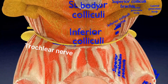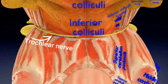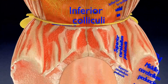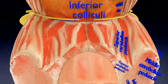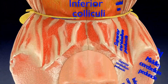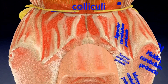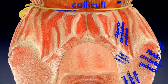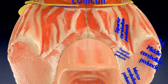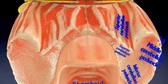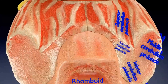The trochlear nerve, or cranial nerve 4, is the only cranial nerve to exit the dorsal side of the brainstem. It innervates the contralateral superior oblique muscle of the eye. Damage to the trochlear nerve will result in loss of this eye movement and may produce double vision or diplopia.